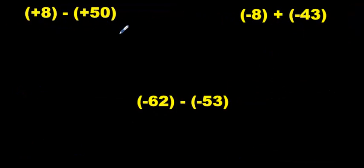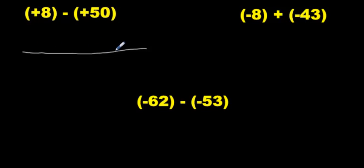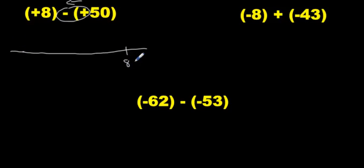Now let's do it without a number line and use bigger numbers. We start at positive 8, so I will make my own number line and put positive 8 over here on the right side. I put it way on this side because these signs are different and I'm going to have to go to the left, so I need room on the left. Once you get good at this, you don't need to draw number lines — you can just do it in your head. But at first you may need to draw them.